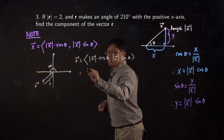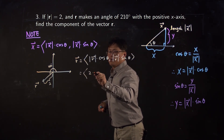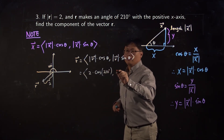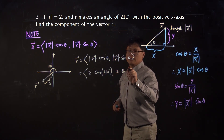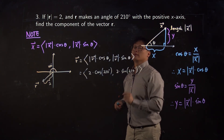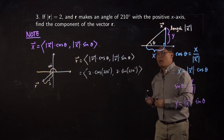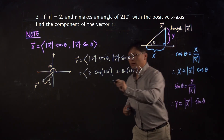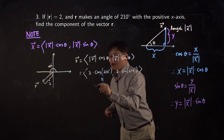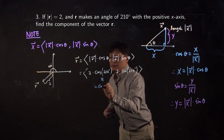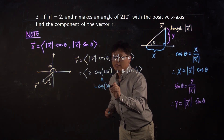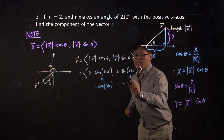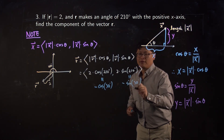Let me plug in everything. r is 2, so we have 2 · cosine 210° and 2 · sine 210°. Do you remember how to find the value of cosine 210°? That equals negative cosine of the reference angle, which is 30°. And sine 210° equals negative sine of the reference angle, which is 30°.